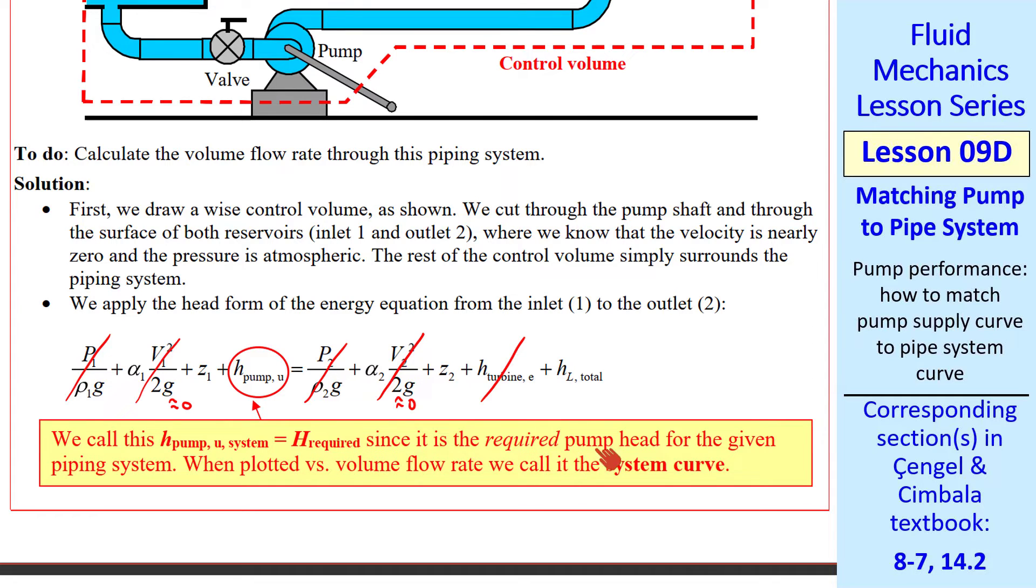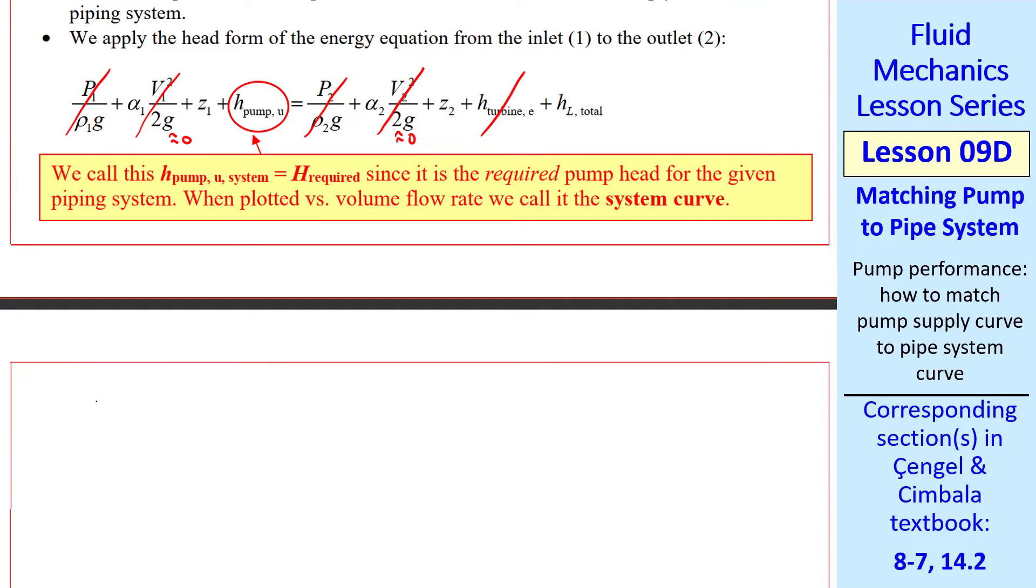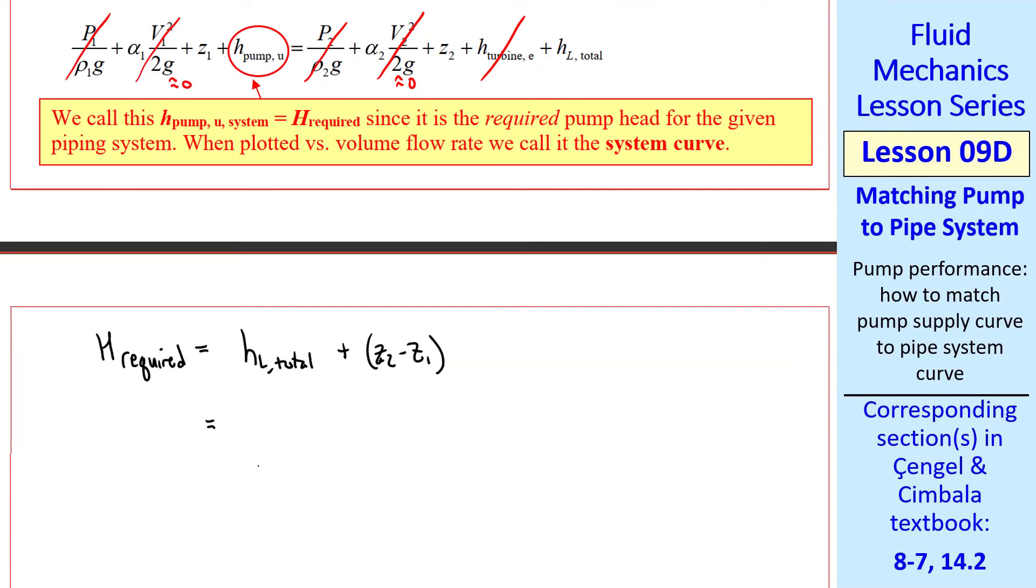It's the required pump head for the given piping system. When we plot this head, it will be our system curve. So this equation reduces to H required equal HL total plus Z2 minus Z1. This is similar to what I showed in the demo. So that submersible pump had to overcome irreversible losses through the tube, plus an elevation difference as I moved the outlet of the tube up.